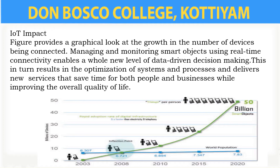Here we have a figure where the y-axis shows the billions of devices being connected to the internet, and the x-axis shows the years. Starting from 2003 till 2020, we can see the vast difference in devices connected to the internet. In 2003 the number was very less, but in 2020 it has been raised to 40 billion devices being connected to the internet.